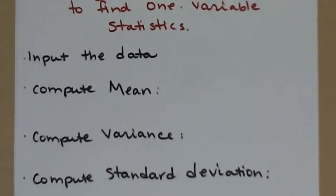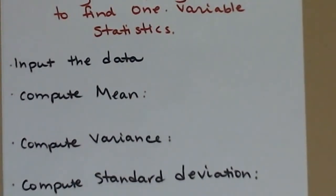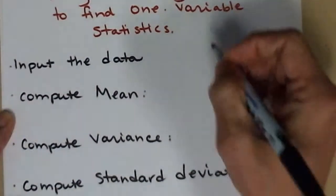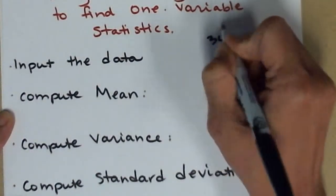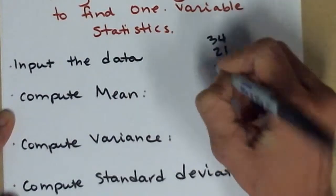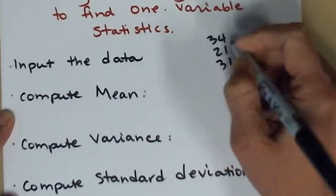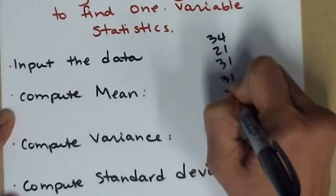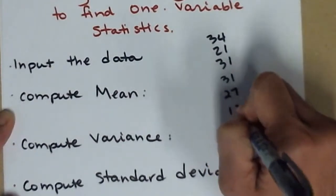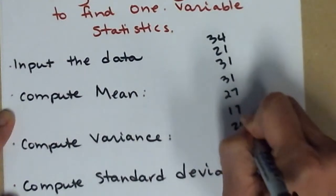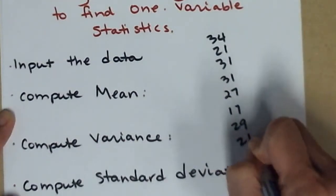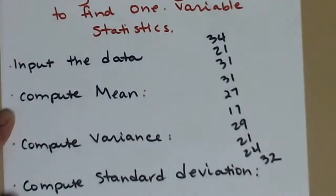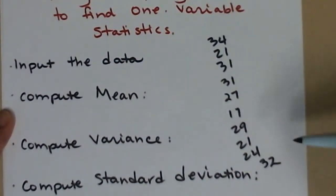First, I should have written down the list of data. These are the winning scores from the last 10 Super Bowls, the team that won and how many points they had. This is only valid if you're watching before the 2014 Super Bowl. The scores are: 34, 21, 31, 31, 27, 17, 29, 21, 24, and 32.